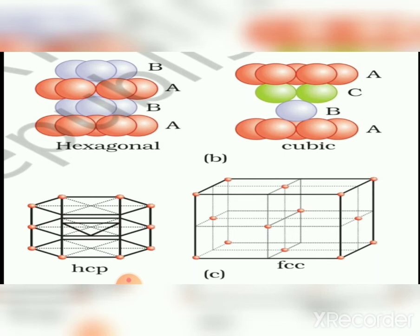Now let the third layer of spheres be placed over the second layer, covering either the tetrahedral voids or the octahedral voids. If the third layer covers the tetrahedral voids, the third layer aligns with the first layer. If the first layer is type A and the second is type B, the third layer is again type A. This gives an ABAB type arrangement, and the structure is called the hexagonal close-packed structure, or HCP structure.